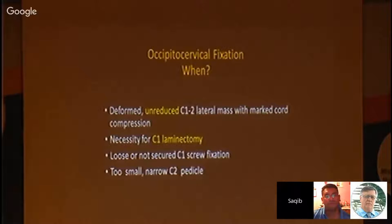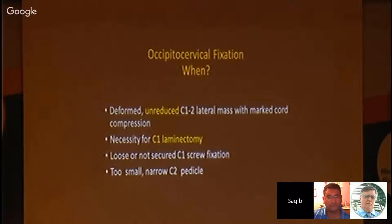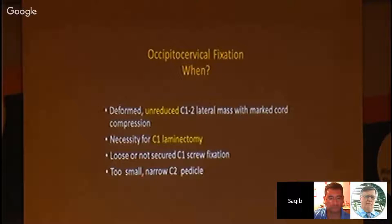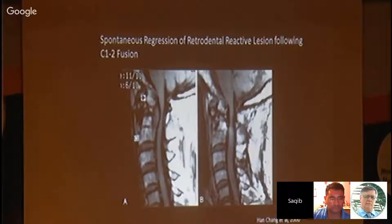Regarding occipitocervical fixation, we must narrow our indications. It is appropriate when there is significant deformity, when reduction is not achieved with conventional techniques, when C1 laminectomy is necessary, when C1 screw fixation is loose or not secured, or when the C2 pedicle is too narrow. Especially in irreducible cases, occipitocervical fixation should be used.